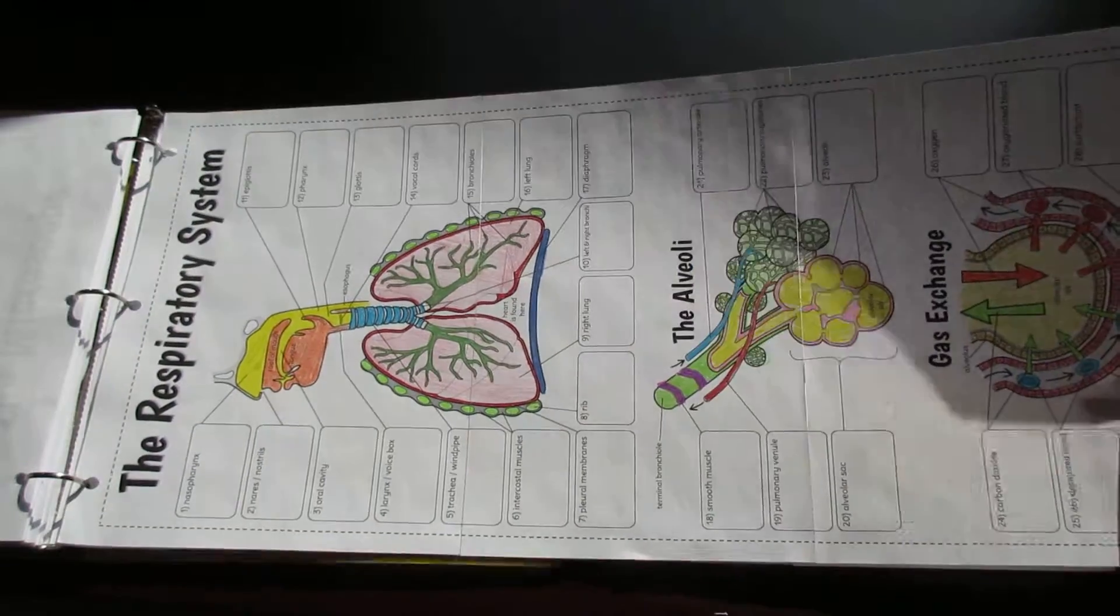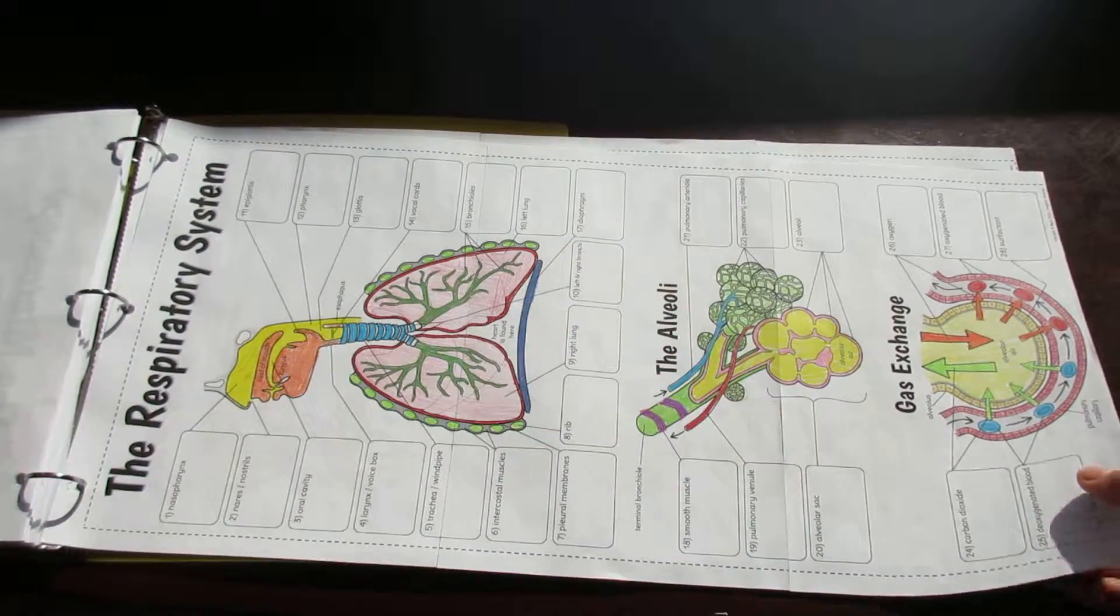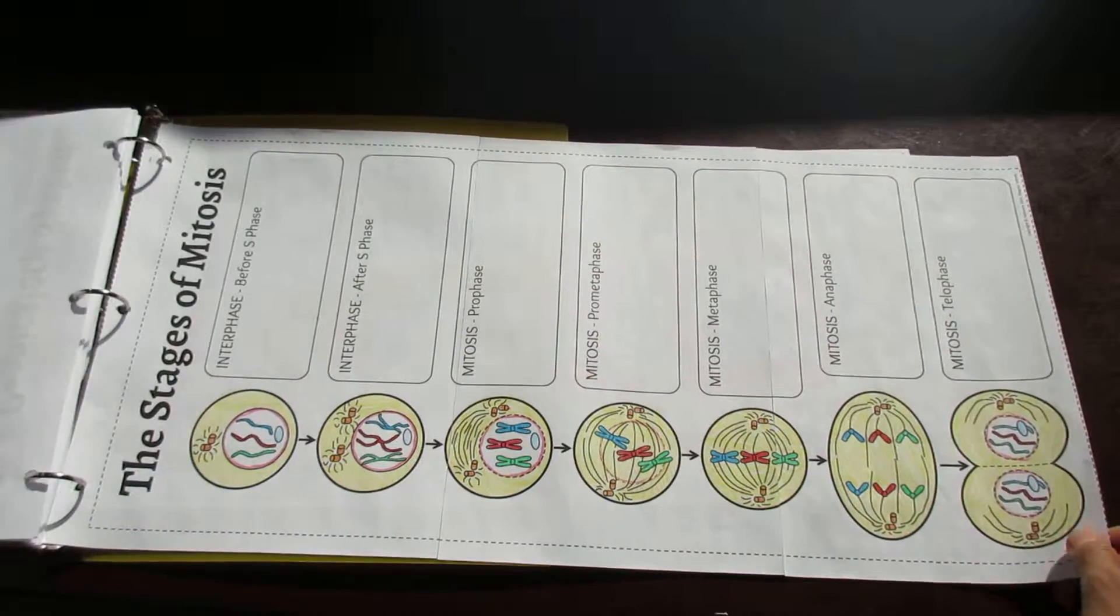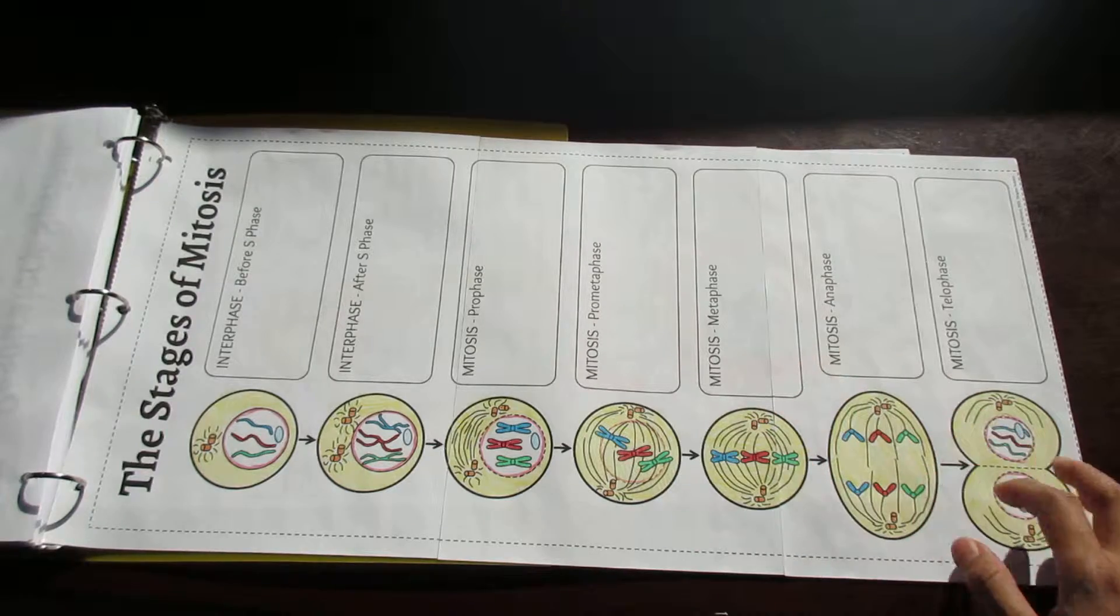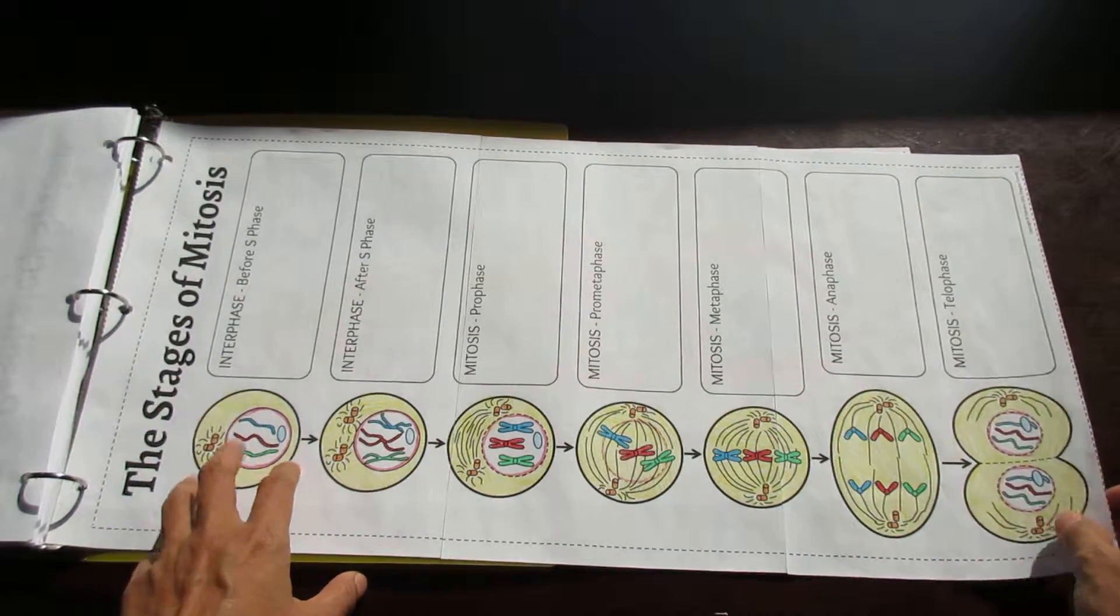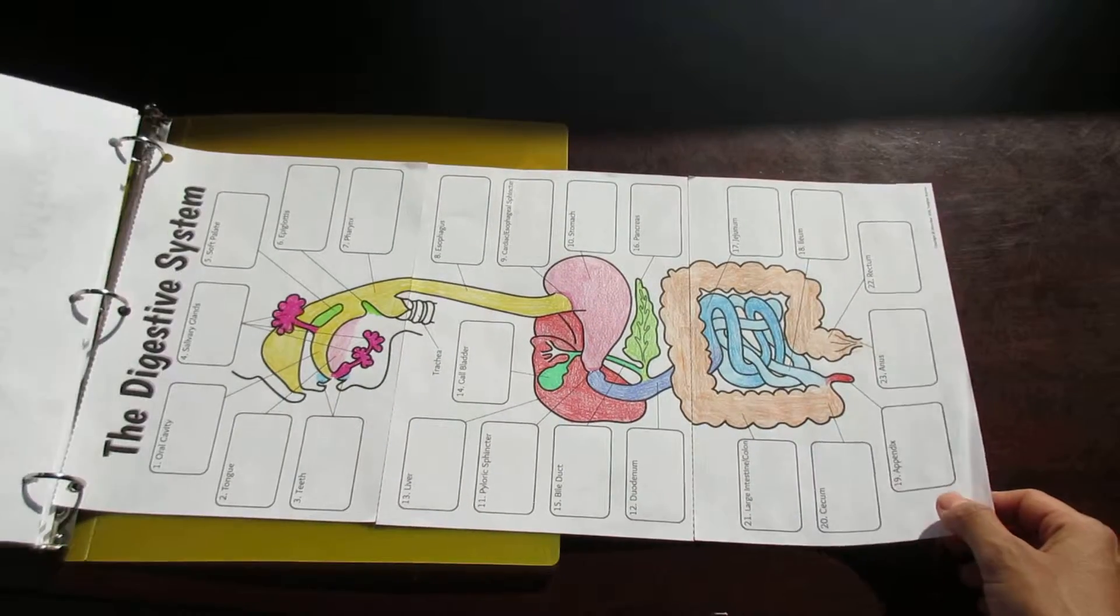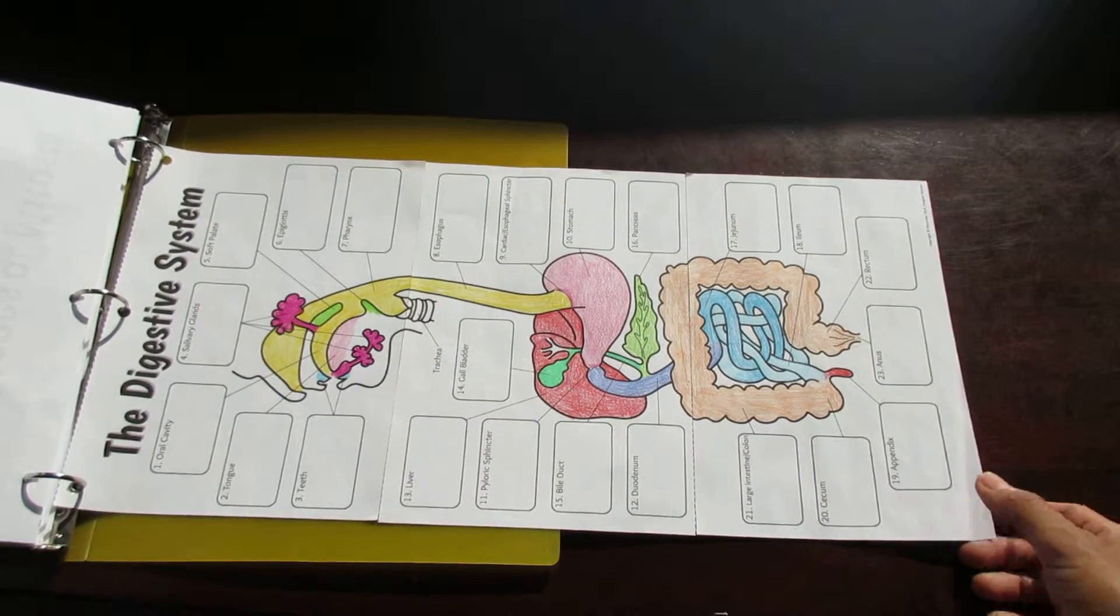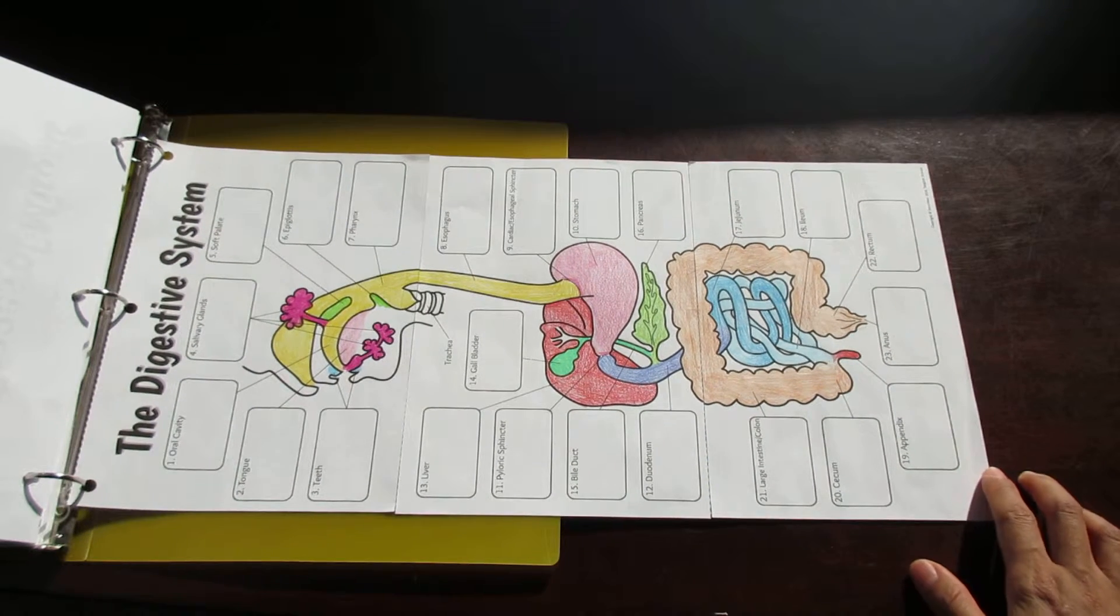And this is the respiratory system, again three pagers but this time in vertical position. And we've got mitosis, comes with prometaphase or without prometaphase, with interphase or without interphase, so those are options for this. And here's one for the digestive system and there's also more that I haven't shown you here in the big biology foldable bundle.